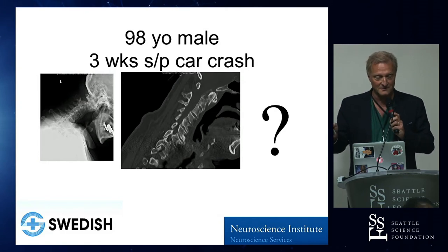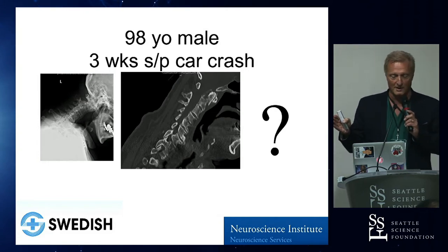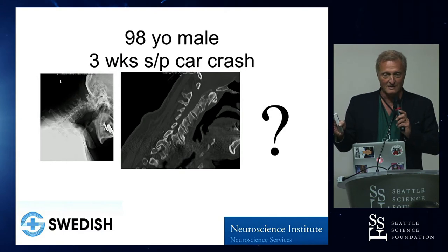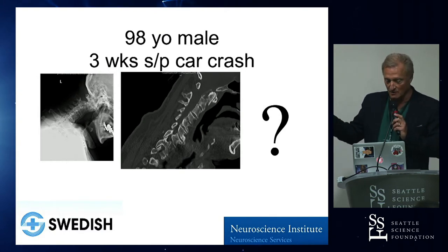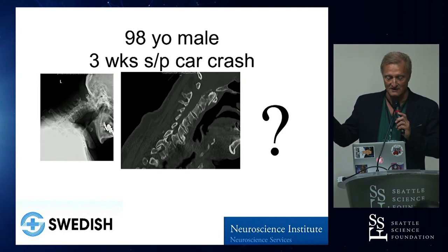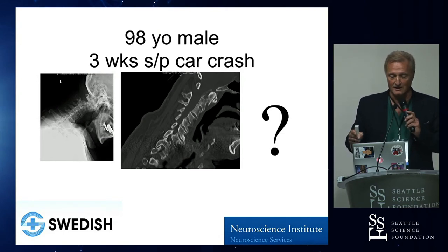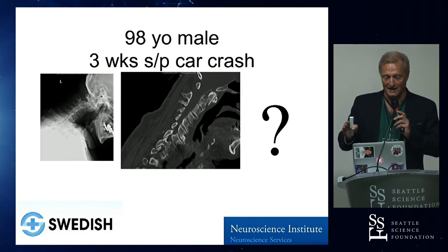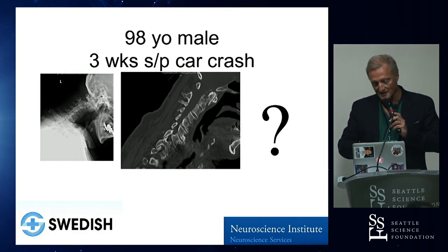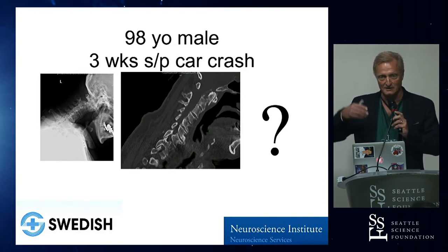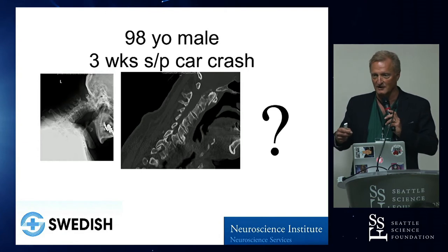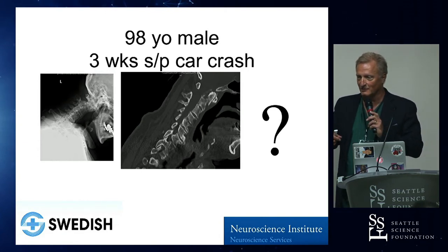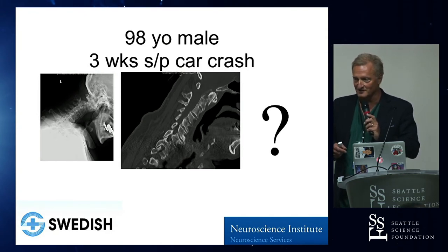Now, the real test: 98-year-old male, three weeks status post — actually not a car crash, this is a true story — an ATV flip. Neurologically intact. He had a rigid neck collar. He did not like it. This is his neck now — he's not in a collar because he cannot tolerate it. He's in a combination of tubular socks and some wadding, because they just couldn't hold a Miami J collar on him.